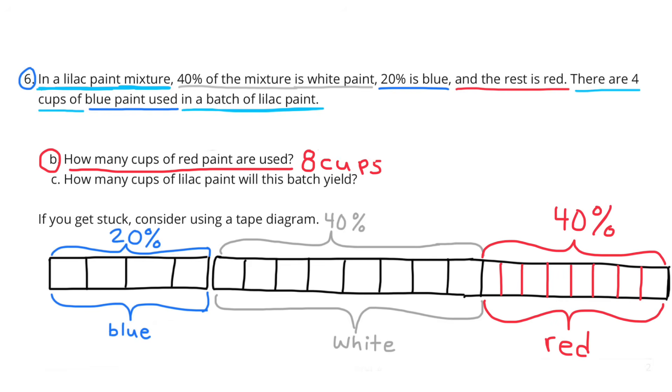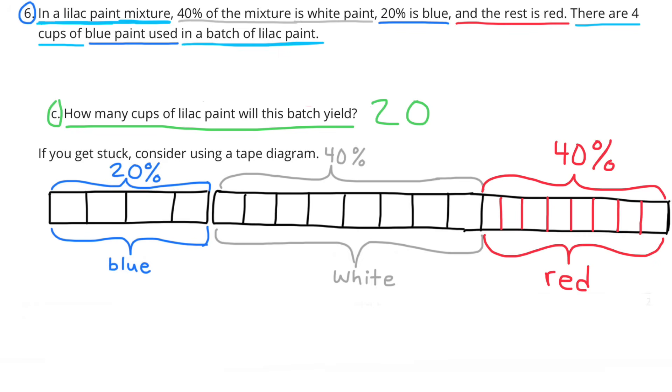How many cups of red paint are used? Well, the rest of it is red. So if there's 40% white, 20% blue, that's a total of 60%. So 100% of the batch minus 60% or minus the blue paint and the white paint, that's going to equal the red paint. So 100% minus 60% equals 40%. 40% would represent 8 cups just like it did with the white paint. My drawing is not to scale, obviously, because the 40% red paint looks a lot smaller than the 40% of white paint. Maybe you could do a better job in your drawing than I did. If we count up all of the cups, we have 4 cups plus 8 cups plus 8 cups, and that totals 20 cups. This batch of lilac paint will yield 20 cups of paint.